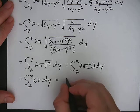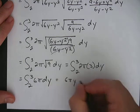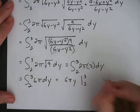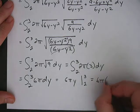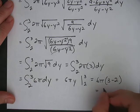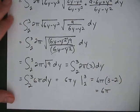So this will be 6 pi y, and we're going to integrate from 2 to 3. Okay, so that's going to be 6 pi times 3 minus 2, which will end up being just 6 pi.